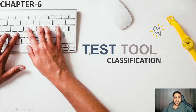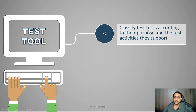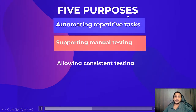After considering test tools, we need to know how to classify them. This is our second topic: classifying test tools according to their purpose and the test activities they support. First, we need to understand what the purpose of classification is — based on what criteria are we classifying these tools.